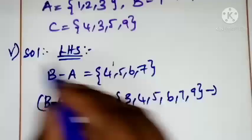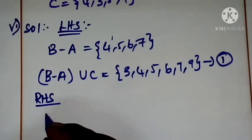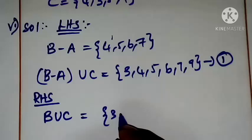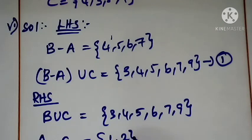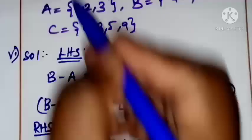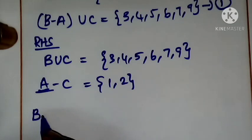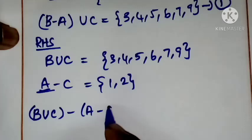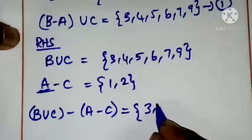This is the 6th subdivision. 6th subdivision is equation number 1. Let us see: A union C minus A intersection C. This is equation number 1 and equation number 2. Elements are 1, 2, 3, 4, 5, 6, 7, 9. This is equation number 2.